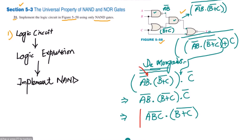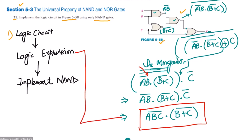So this is the logic expression for this circuit: ABC complement dot (B plus C whole complement). This is the answer and the logic expression has been confirmed. Now we have to implement it using NAND gates.